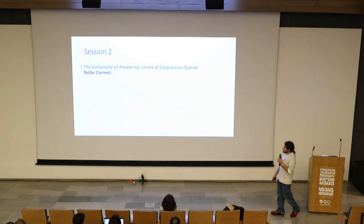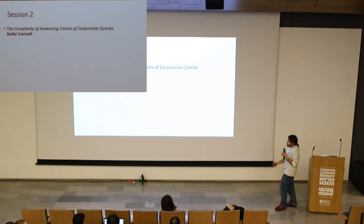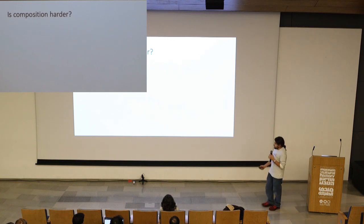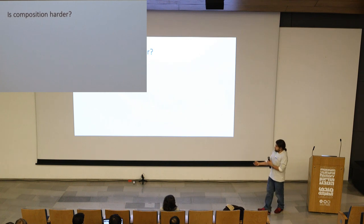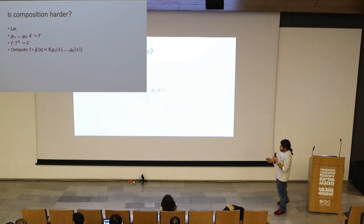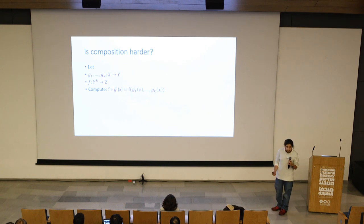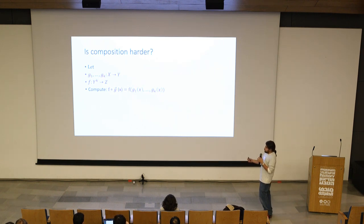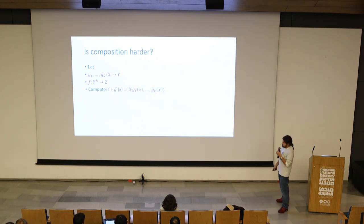The first talk will be about complexity of answering union of constructive queries. When I looked at this paper, it immediately looked similar to the following nice problem: is composition harder than just computing everything? Suppose we have k functions, g1 to gk, from some domain X to Y, and another function f that takes k inputs from Y and outputs something from Z. We can define the composition of f and g.